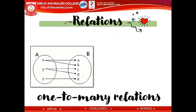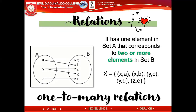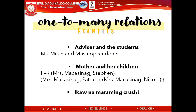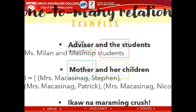Now let's have the third relation. It's called the one-to-many relation. Why? Because it has one element in set A that corresponds to two or more elements in set B. Your set X is: X is to A, X is to B, Y is to C, Y is to D, and Z is to E. For example, the advisor and the students: Miss Milan and my advisory class, the Masinop students. Another example is mother and her children: Mrs. Makasinag is to Stephen, Mrs. Makasinag is to Patrick, Mrs. Makasinag is to Nicole.